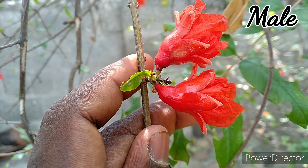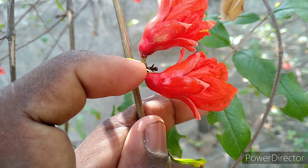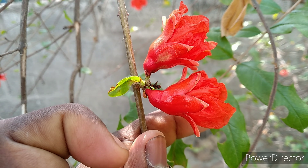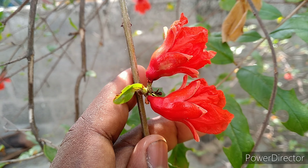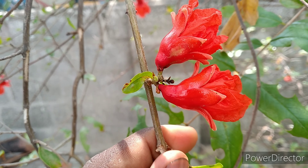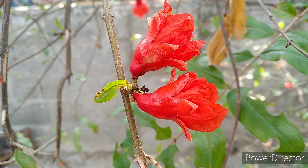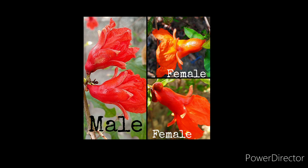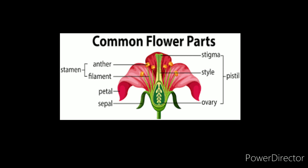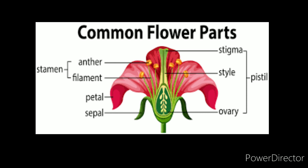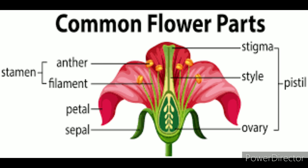The female flower produces fruit when pollinated — you can see the symbols indicating this. Now we are going to use hand pollination. How easy it is to do hand pollination is available in the description. This covers the flower parts.